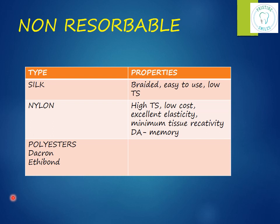Moving on to non-resorbable sutures. Silk is the most common — created from protein filaments spun by the silkworm. It is braided, soft, and easy to handle, but has the lowest tensile strength. Being braided, it carries the wicking effect risk — bacteria can sit in the interstices and cause infection. However, since these are non-resorbable, they are removed after 7 to 10 days, and if removed on time, the wicking effect is of little significance.